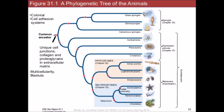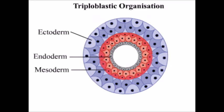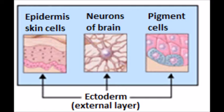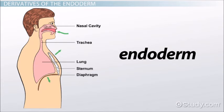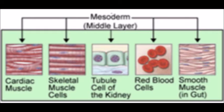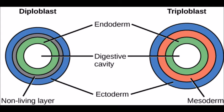Thus, we leave the triploblastic animals. Triploblasty refers to the number of layers of tissue that you develop embryonically. Triploblasts have three layers: ectoderm, mesoderm, and endoderm. The ectoderm produces the epidermis and nervous system. The endoderm produces the digestive, respiratory, endocrine, auditory, and urinary systems. And the mesoderm forms everything in between. However, animals with only two tissue layers — the ectoderm and endoderm — are called diploblasts.